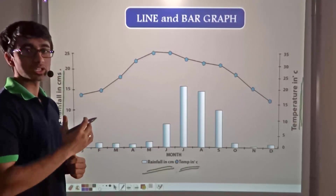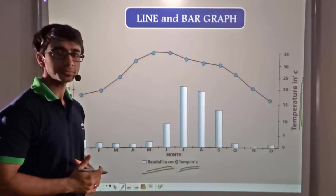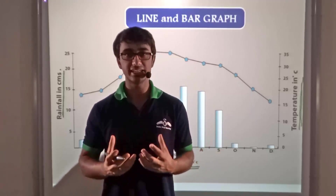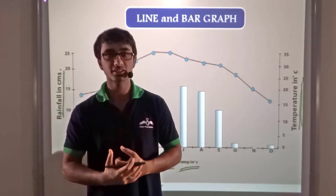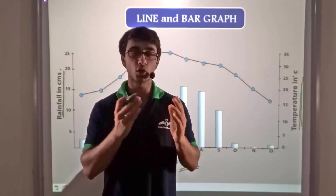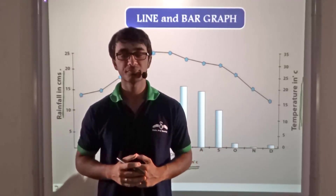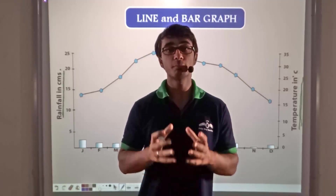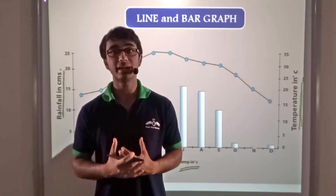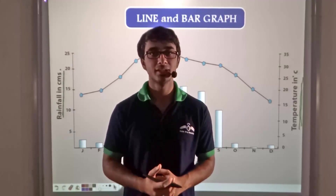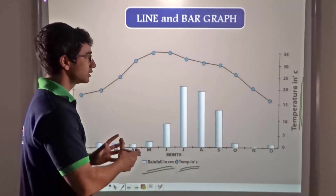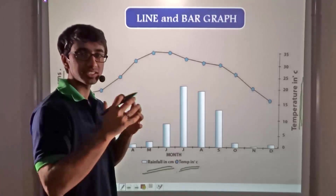Here we studied how graphs help us in comparing and representing data. We studied about line graphs and multiple line graphs which help us compare and represent data across two different sets of observations. We also studied about bar graphs, which can be represented as horizontal or vertical bar graphs. Multiple bar graphs help us compare observations across two data sets. Lastly, we saw how a combination of line and bar graph helps us plot two different but somewhat interrelated data in the same graph.